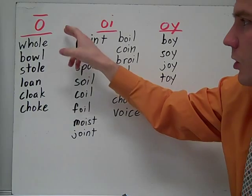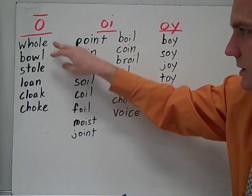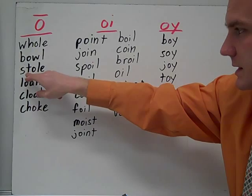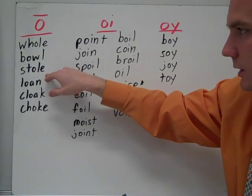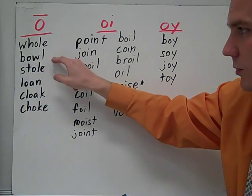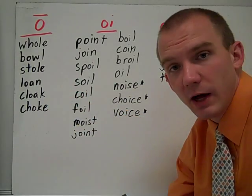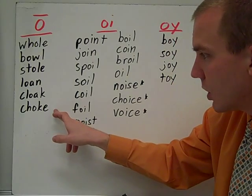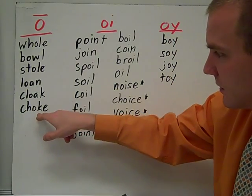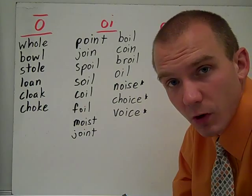So our long O words are whole, bowl, stole. See how whole and bowl have your CVCE pattern to create the long O? Stole has the OW pattern. You have loan, cloak, those both have your OA vowel vowels in the middle. And choke has the CVCE pattern to create your long O.